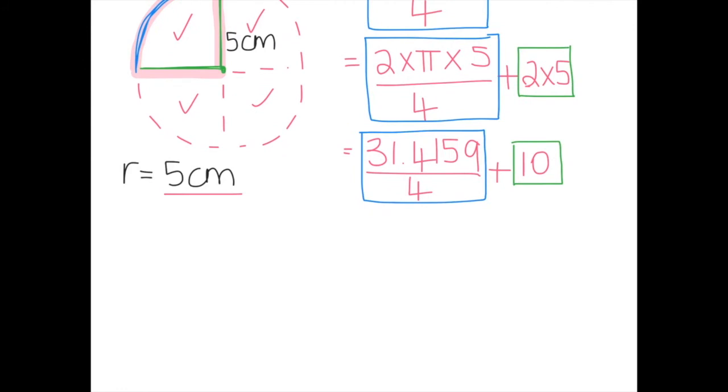Still going, 31.4159 divided by 4 gives us 7.853, actually we'll round that up to 854, plus 10.